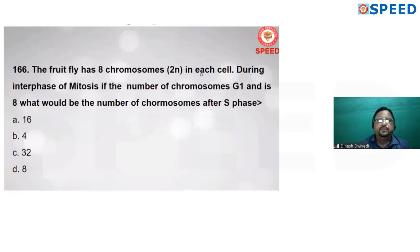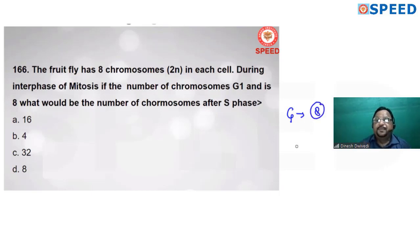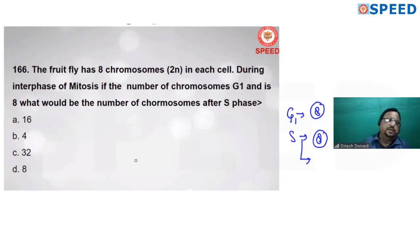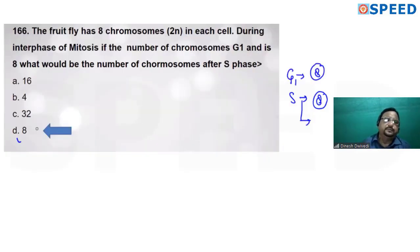The fruit fly has 8 chromosomes. During interphase of mitosis, if the number of chromosomes in G1 is 8, what will be the number after S phase? In G1, DNA replication does not occur in terms of chromosome number. After S phase, the chromosome number remains 8, but DNA molecules become double. Alternate D is correct.